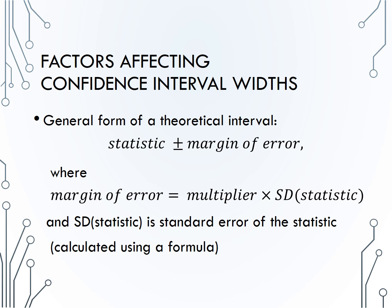That means that the width of a confidence interval is determined by the margin of error. In fact, the confidence interval width, or the difference between the upper and lower endpoints, is just twice the margin of error. So in determining what will affect the width of a confidence interval, we need to think about what will impact the margin of error.